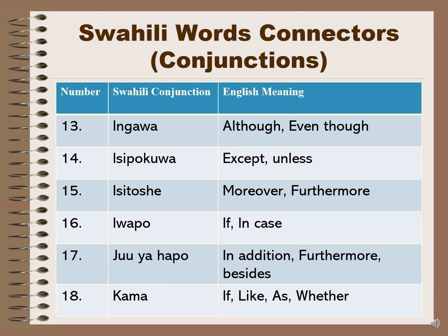Number thirteen: 'ingawa' or 'mengawa' means 'although' or 'even though'. Number fourteen: 'isipokuwa' which means 'except' or 'unless'. Number fifteen: 'zaidi ya hayo' meaning 'moreover' or 'furthermore'. Number sixteen: 'iwapo' means 'if' or 'in case'. Number seventeen means 'in addition', 'furthermore', or 'besides'.